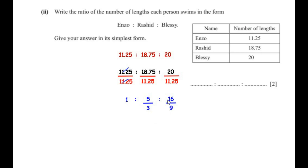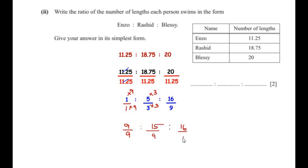To simplify further, we take the LCM of the denominators. Writing 1 as 1 over 1, the LCM of 1, 3, and 9 is 9. So we get 9 over 9, then 5 times 3 over 9 giving 15 over 9, and 16 over 9. Cancelling the common denominator of 9 gives us the ratio 9 to 15 to 16 in its simplest form.